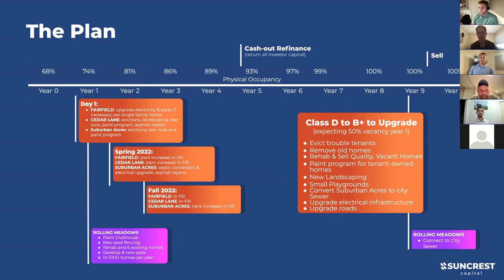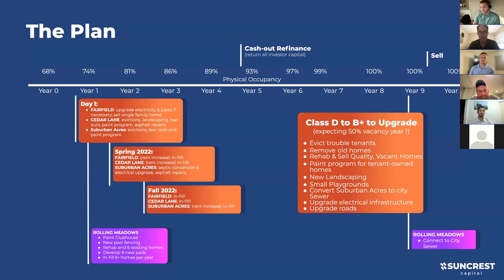We've already got an engineering firm engaged for the septic conversion at Suburban Acres - the same firm we've used in Iowa - and we're set to do that conversion in spring of year one once the ground thaws. For all three distressed communities, we'll need to evict some troubled tenants, remove old homes, rehab and sell existing homes that are in good enough shape to keep.